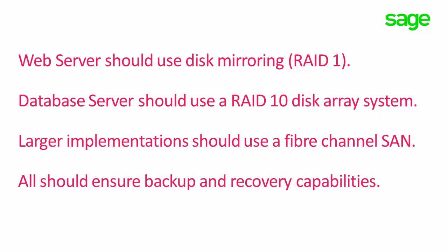The installation and upgrade guide makes a number of general recommendations about the hardware and software to use. The web server should use disk mirroring — RAID 1 — and the database server should use a RAID 10 disk array. For larger implementations, you should consider using a fibre channel storage area network (SAN). Every customer should ensure backup and recovery capabilities, including the use of a hot standby system, an uninterruptible power supply, and hyper-threading should be turned off in older CPUs.